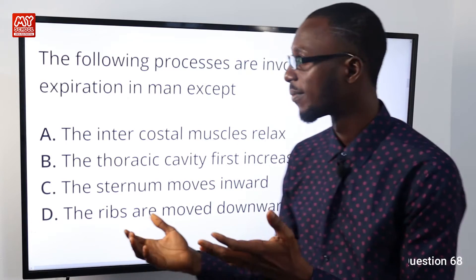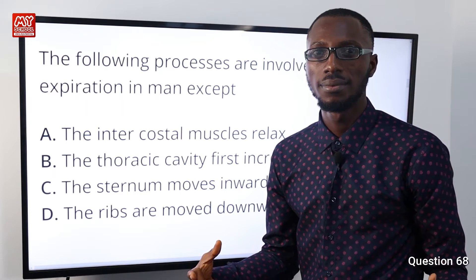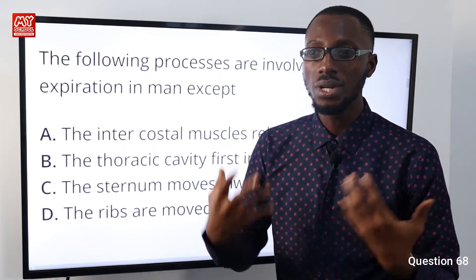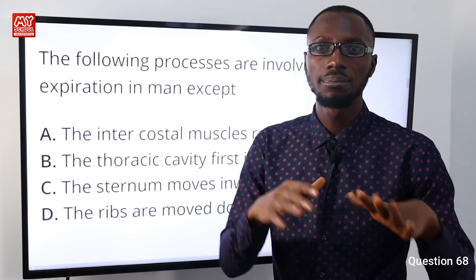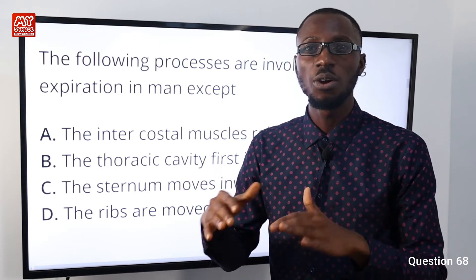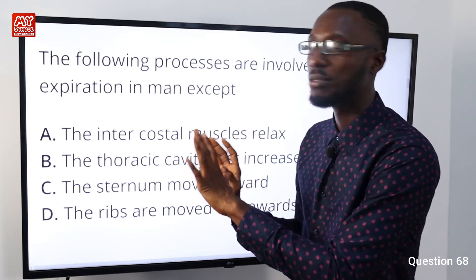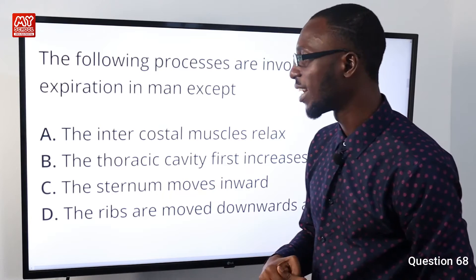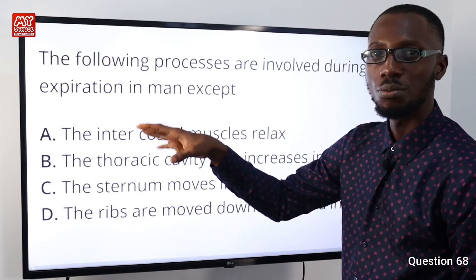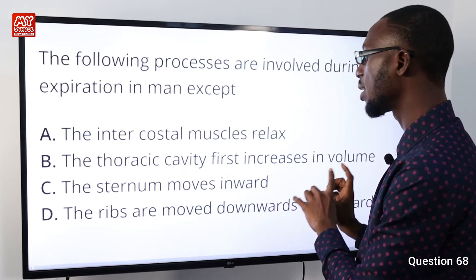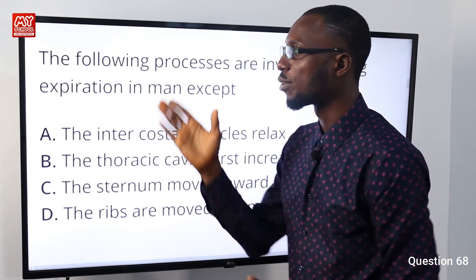Question number 68: The following processes are involved during expiration in man, except... When we breathe out, the lungs deflate, the rib muscles and diaphragm relax, and the thoracic cavity decreases in volume. Any option contrary to this is the exception. Looking at our options, option B is contrary — it states the thoracic cavity increases in volume, which is incorrect. The thoracic cavity decreases in volume during expiration, so option B is the correct answer to the exception question.